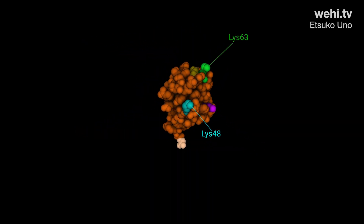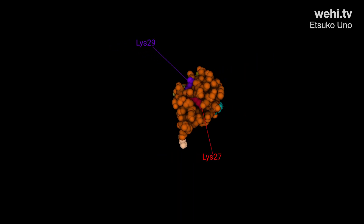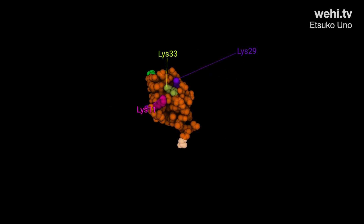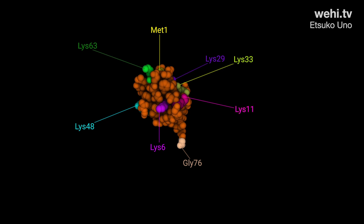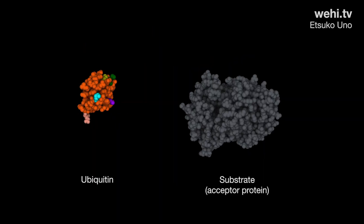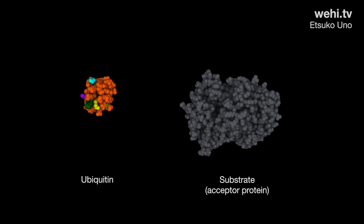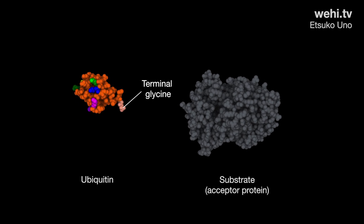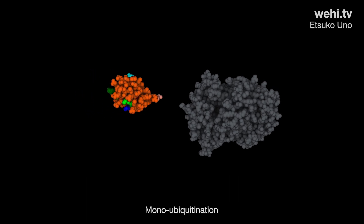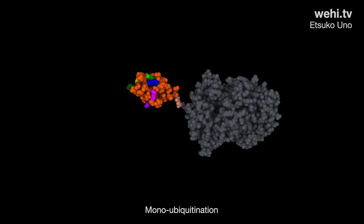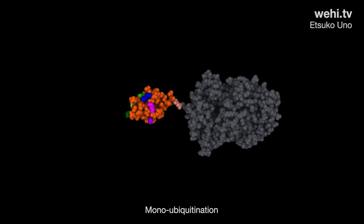Inside your body, the ubiquitin protein forms a distinct three-dimensional shape, with methionine, lysines, and terminal glycine residues all in defined positions. Ubiquitin attaches to the substrate via its terminal glycine residue. Attachment of one ubiquitin molecule to a substrate protein is known as monoubiquitination.